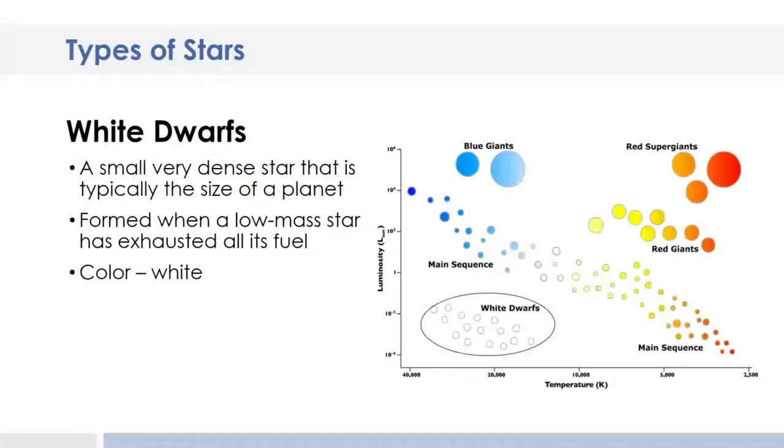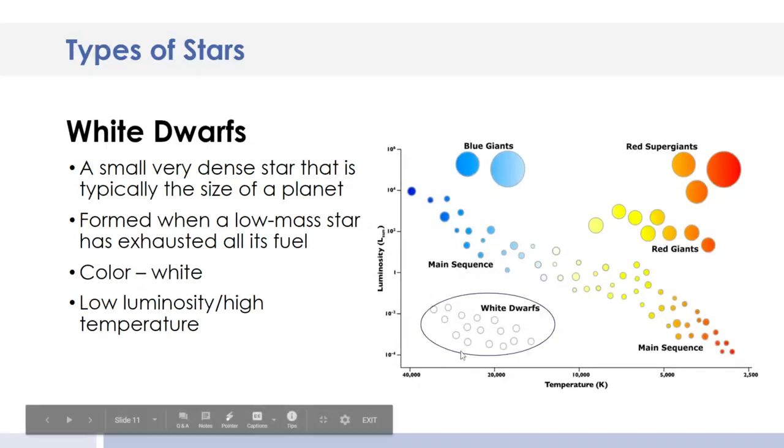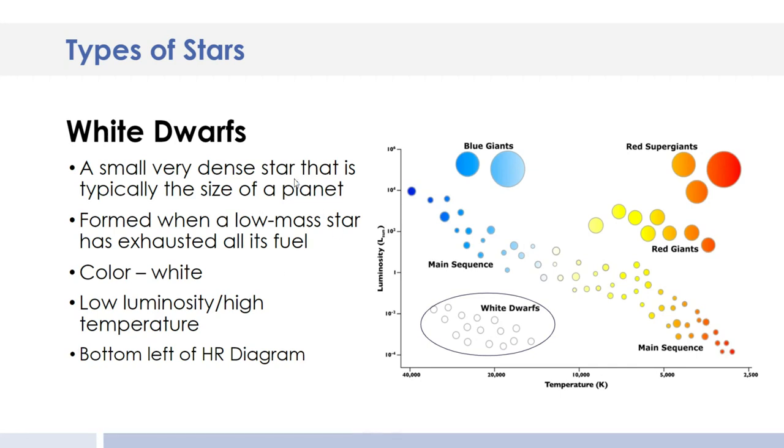The color would be white, obviously. And it's just not very bright. And that's because it's so small, but it is quite hot. You can see over here in the higher temperature range. So you're going to find these in the bottom left of the HR diagram. So make sure you have at least these two bullet points filled in.